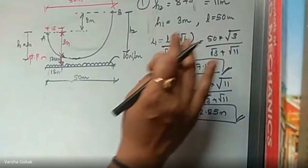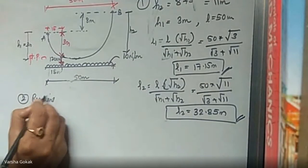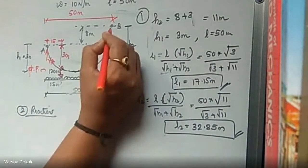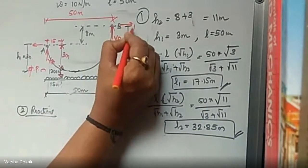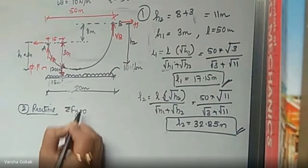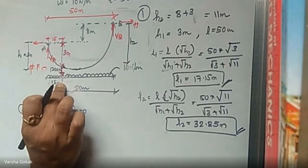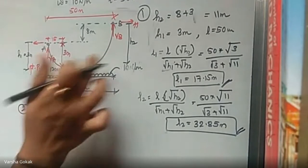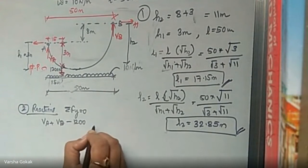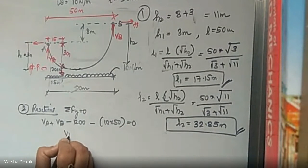The second step is to find the reactions. We show VA, VB vertical reactions and horizontal thrust H on the diagram. Writing summation Fy equals 0: VA plus VB minus 1200 (point load) minus 10 times 50 (UDL) equals 0, giving VA plus VB equals 500 plus 1200 equals 1700 Newtons. This is equation one.